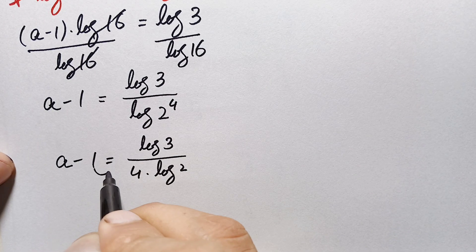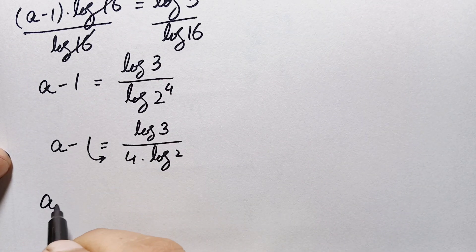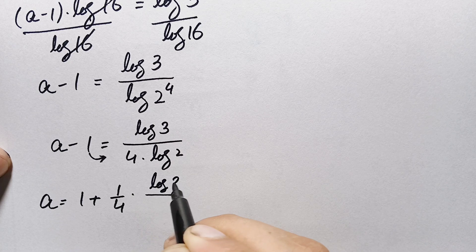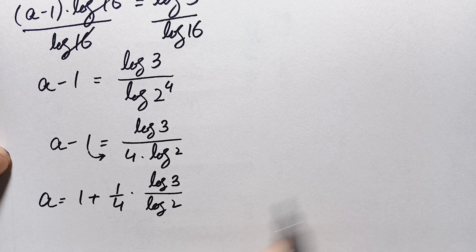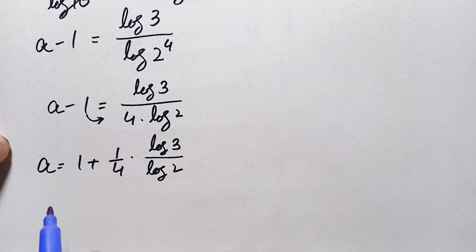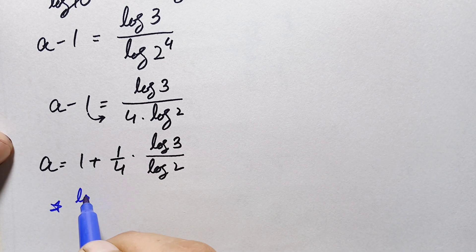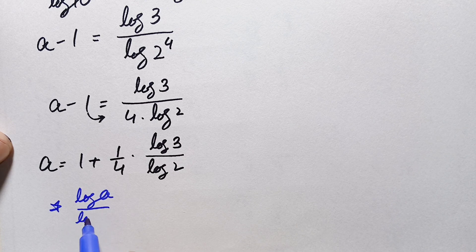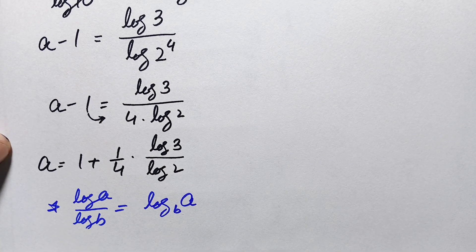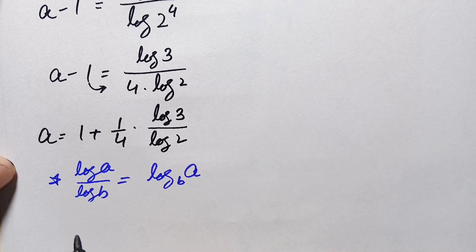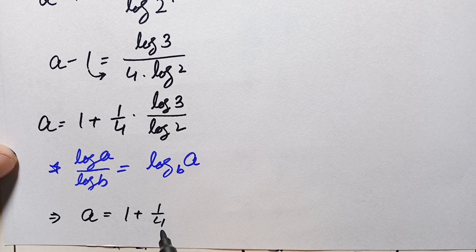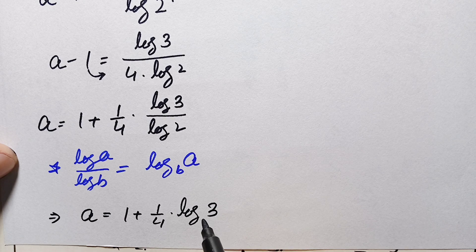We move the negative 1 to the right hand side, making it positive 1. So a equals 1 plus one-fourth times log of 3 divided by log of 2. Using the change of base logarithm identity — log of a divided by log of b equals log of a with base b — this becomes: a equals 1 plus one-fourth times log base 2 of 3.